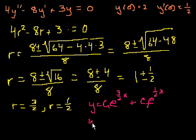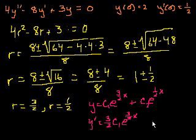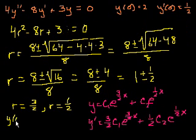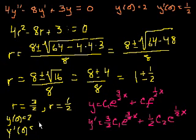To apply the initial conditions, we need y of x and y prime of x. So y prime of our general solution equals 3 halves times c1 times e to the 3 halves x, plus 1 half times c2 times e to the 1 half x. Now let's use our actual initial conditions: y of 0 equals 2, and y prime of 0 equals 1 half.